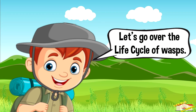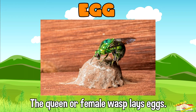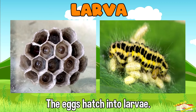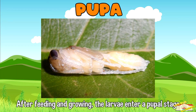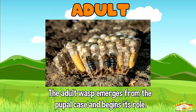Let's go over the life cycle of the wasp. Egg: the queen or female wasp lays eggs, usually in a prepared nest or in a host organism. Larva: the eggs hatch into larvae, which are often fed by the workers or provided with paralyzed prey in the case of solitary wasps. Pupa: after feeding and growing, the larva enters a pupal stage during which it undergoes metamorphosis. Adult: the adult wasp emerges from the pupal case and begins its role, either as a worker, drone, or new queen.